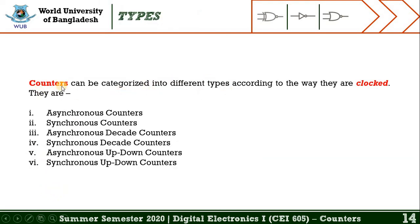Counters can be categorized into different types according to the way they are clocked: asynchronous counters, synchronous counters, asynchronous decade counters, synchronous decade counters, asynchronous up-down counters, and synchronous up-down counters.